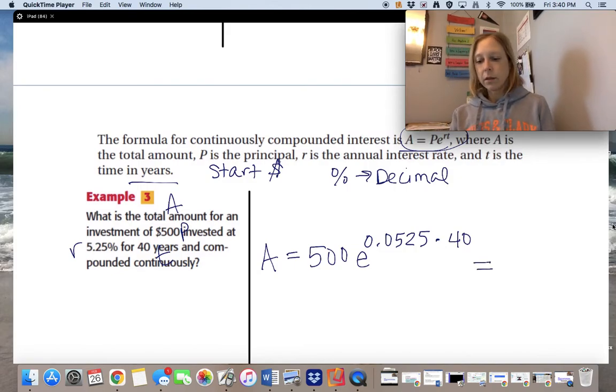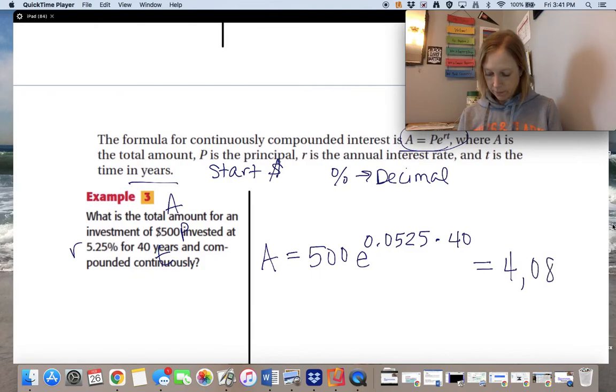All right. Pick up those calculators. Do this. Make sure you know how to put this in your calculator. 500, and then second LN to get to that E button. 0.0525 times 40. Then close the parentheses. And we get $4,083. And I'm just going to leave it as a whole number. Because when we're talking over $4,000, you probably don't care too much about that last eight cents.